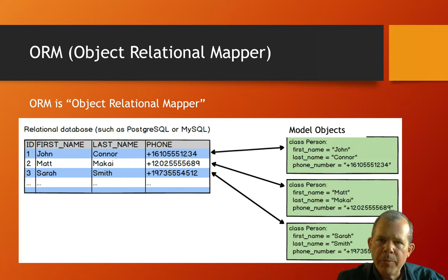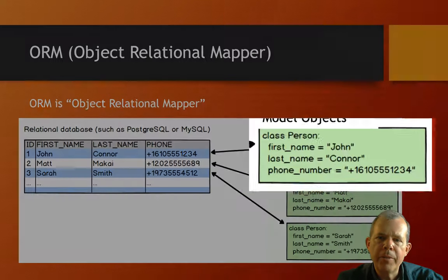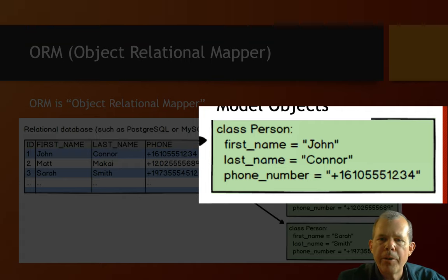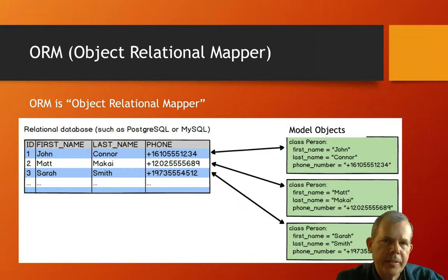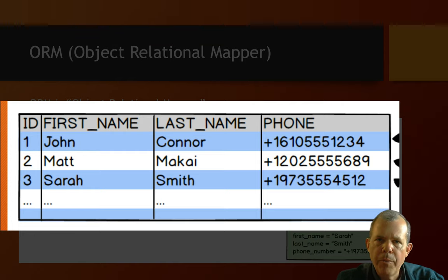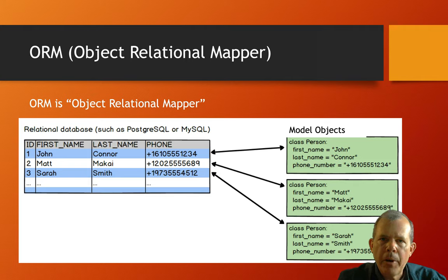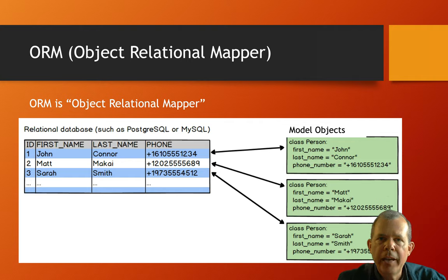The initials ORM stand for Object Relational Mapper. Starting on the right side with these green boxes, we have classes. Classes have properties and methods, but we're primarily interested in the properties. The person property has a name and a phone number, and these map directly to the tables in the database. With an Object Relational Mapper, all of that mapping is done in one line of code. If your database matches your classes, the ORM will let you create the objects first, then with one command create a table that matches up perfectly with your classes.